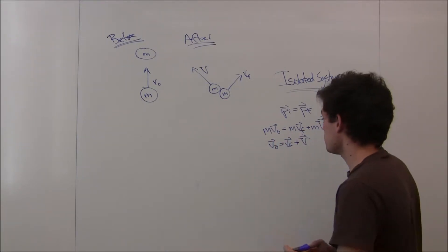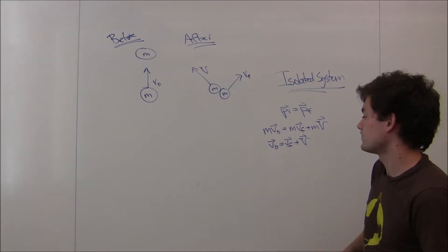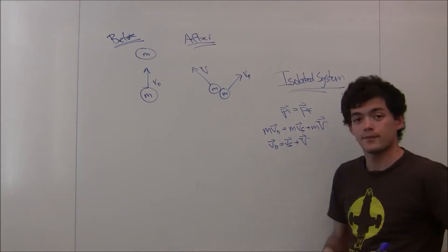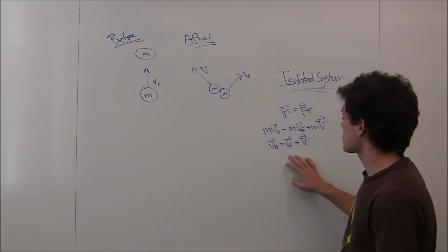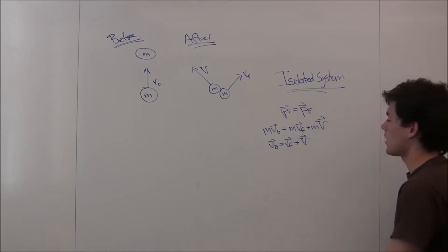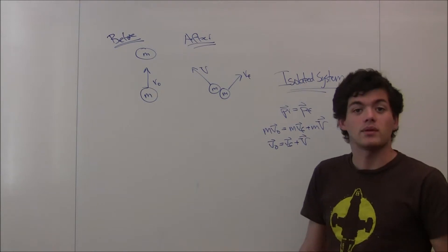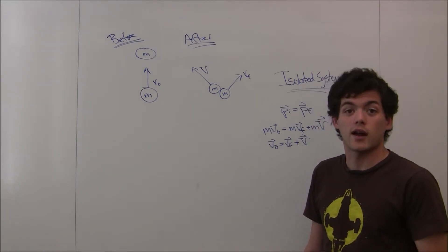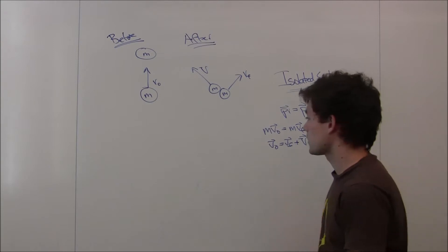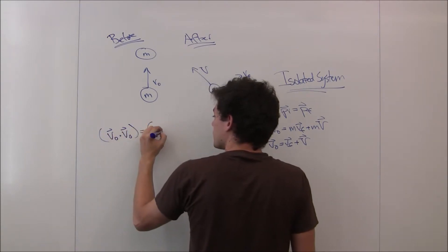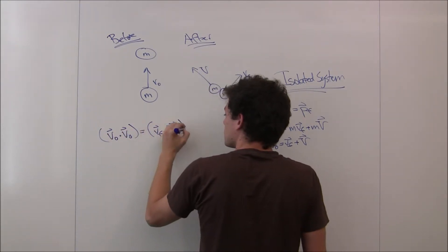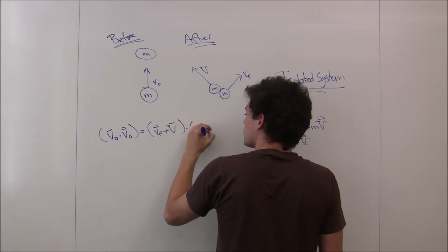So now, all we're going to do is take the dot product of each of these sides with itself. And I realize this is somewhat of an intuitive step, but what this is going to do is give us an expression that contains v final dotted with big V. And we're going to use that to figure out the conditions for our answer. So if we take the dot product, we get v0 dot v0 equals v final plus big V dot v final plus big V.